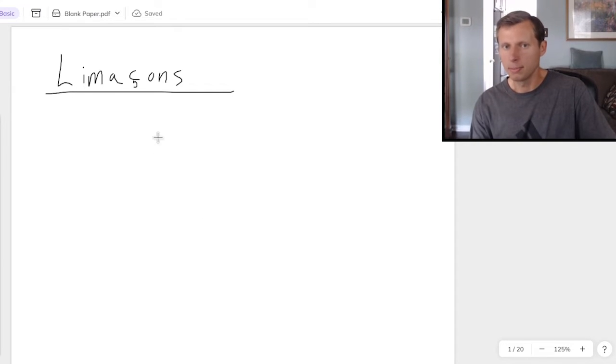So first of all, this is not important, but the word limaçon, that little tail on the C, is known as a cedilla, or in French, a cedi. But that tail basically means you want to pronounce it as the soft C, which is why it's a limaçon and not a lima-can. Again, that doesn't matter that much at all. What matters is the formula.